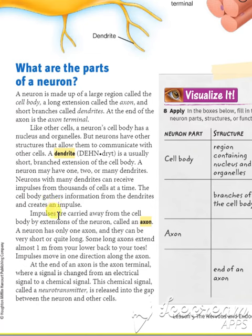SubhanAllah — thousands of cells at a time. The cell body gathers information from the dendrites and creates an impulse — that's why everything is so fast. Impulses are carried away from the cell body by an extension of the neuron called the axon. Please just focus on the vocabulary words here, and inshAllah when we meet next time, next year, I will explain everything again in brief.